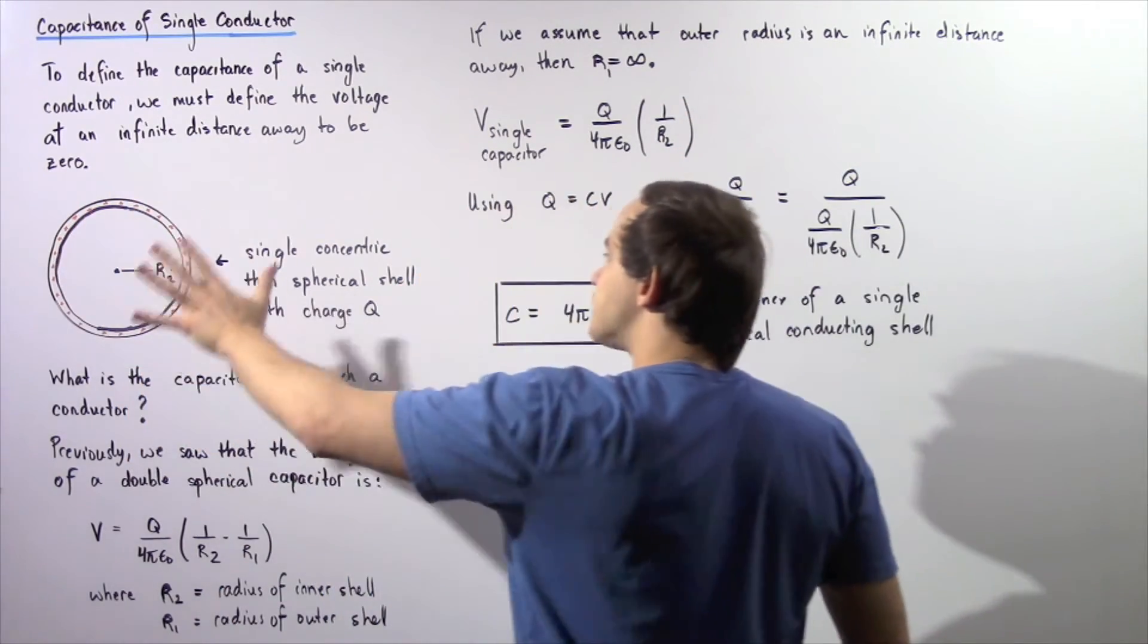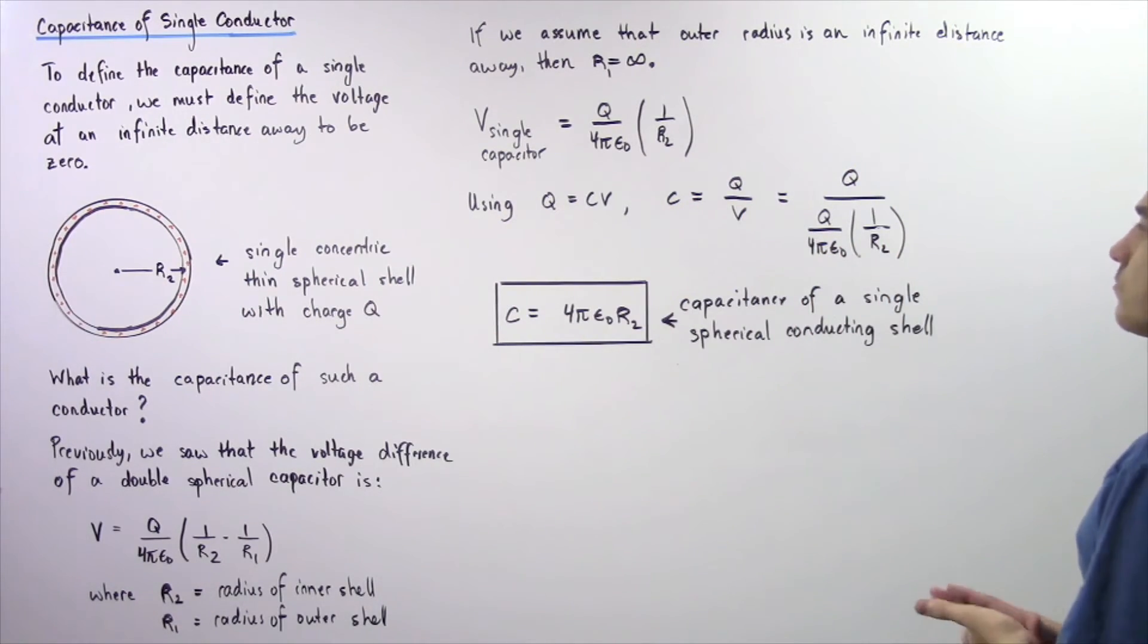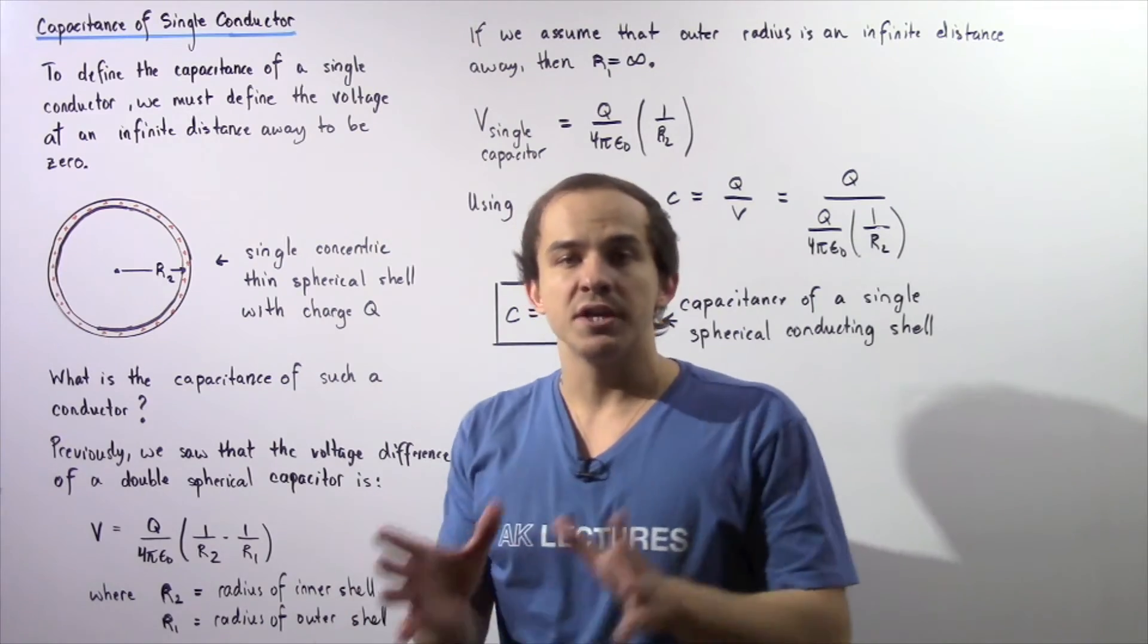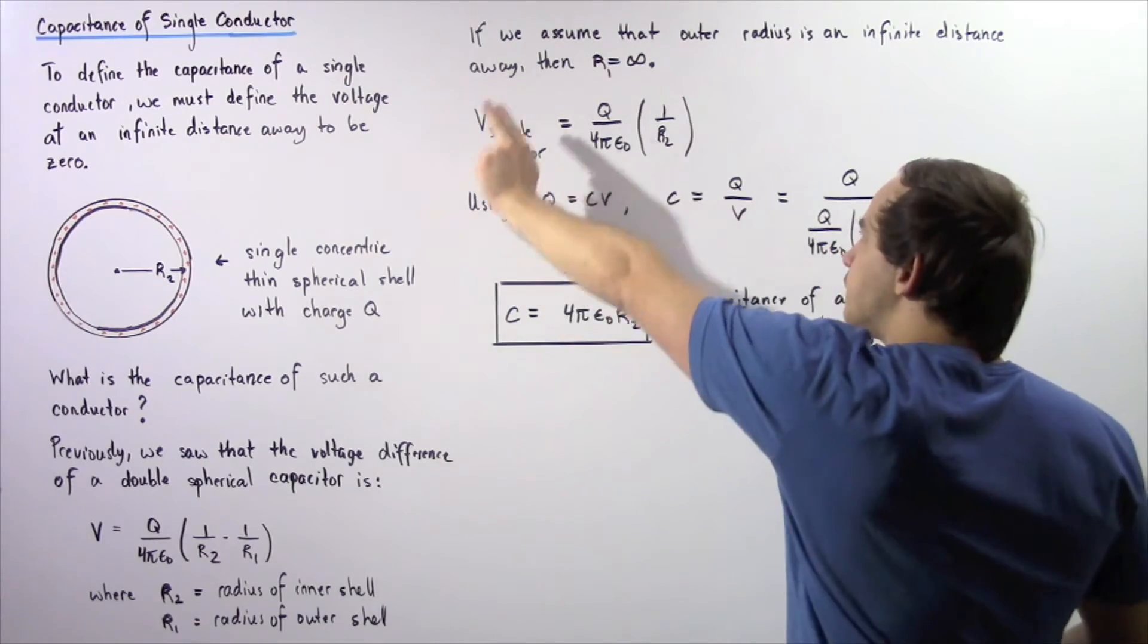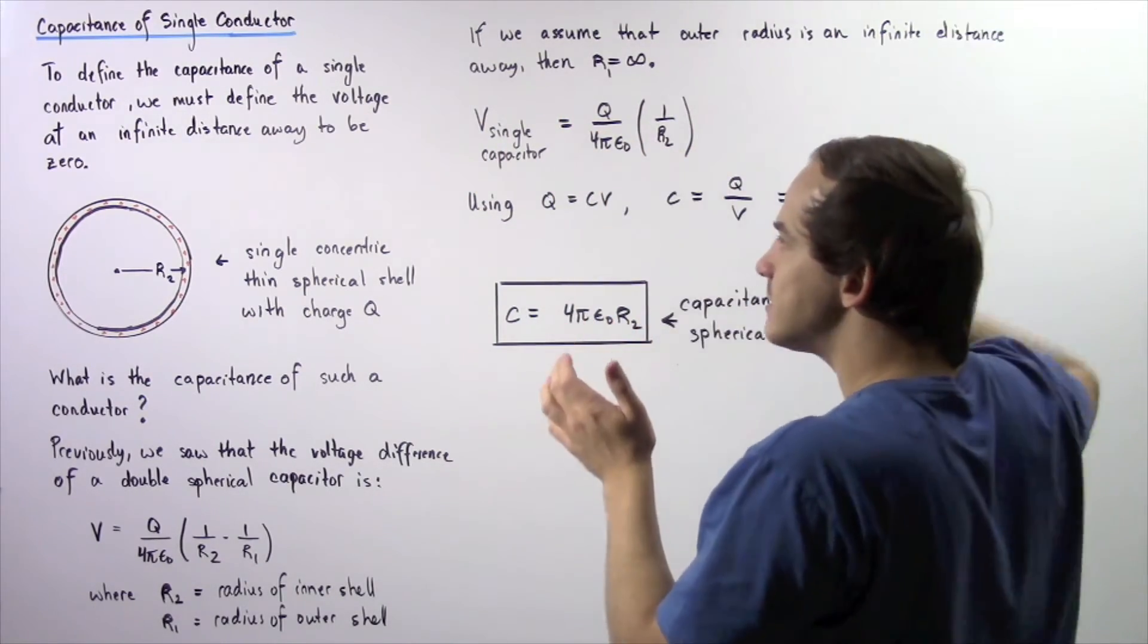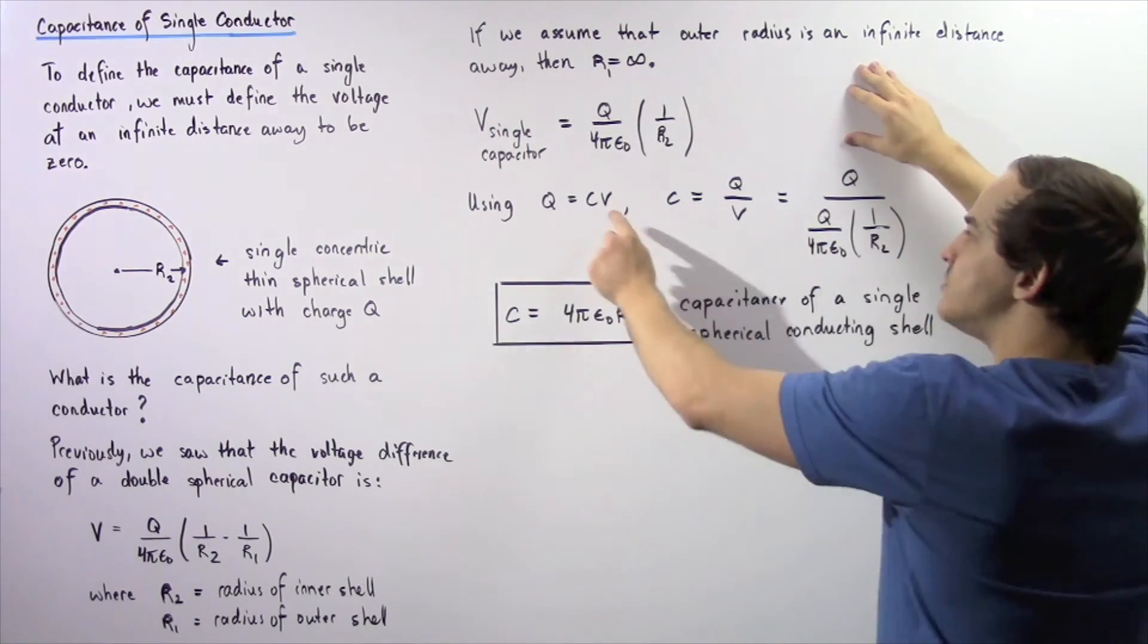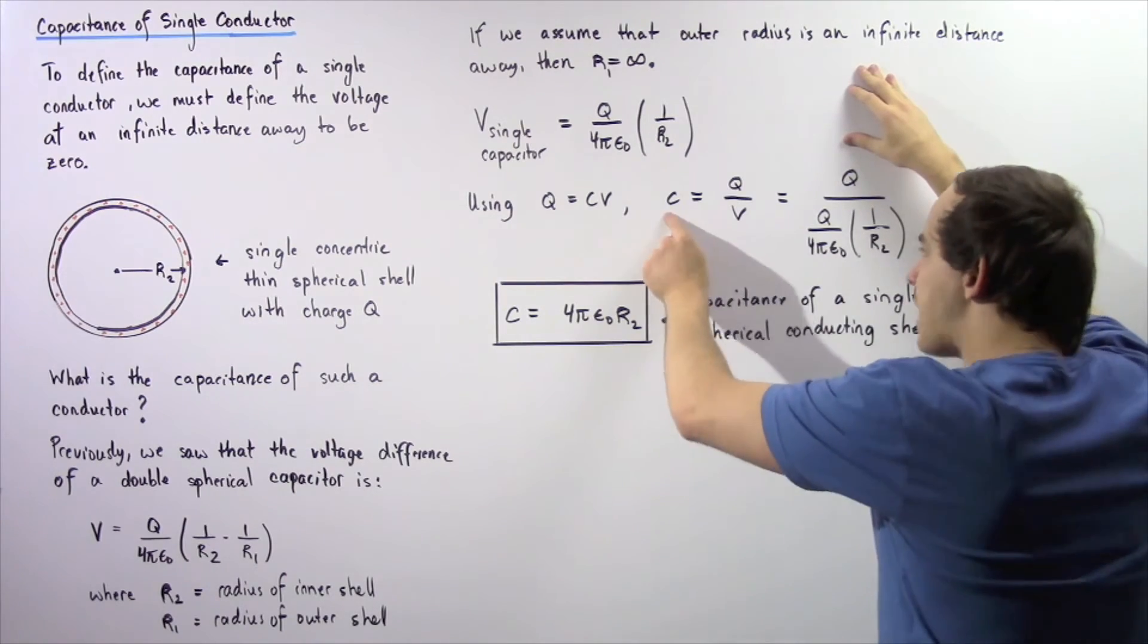Now we have to use the following equation. The quantity of charge q is equal to the product of the capacitance and the voltage. In this case, the voltage difference is simply equal to this quantity because the voltage at an infinite distance far away is assumed to be zero. So that means we can take this result and plug it into our V. We take this equation, rearrange and solve for our capacitance.